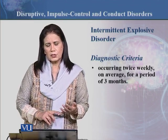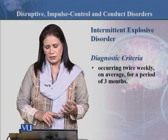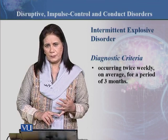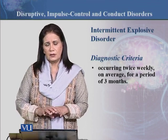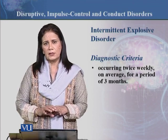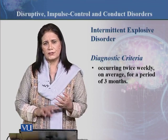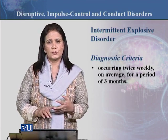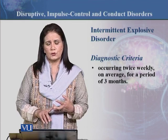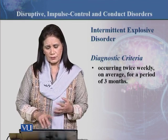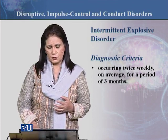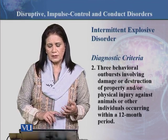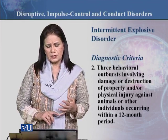It occurs twice weekly on average for a period of three months. So if, over the past three months, on average there has been verbal or physical aggression twice weekly — towards animals, property, or other individuals — then you diagnose them with Intermittent Explosive Disorder.